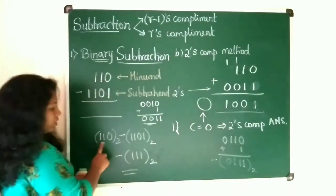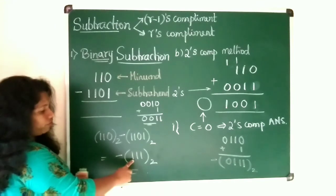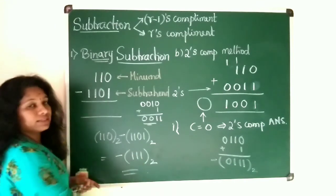So the answer is 1, 1, 0 minus 1, 1, 0, 1 is minus of 1, 1, 1. This is the answer.